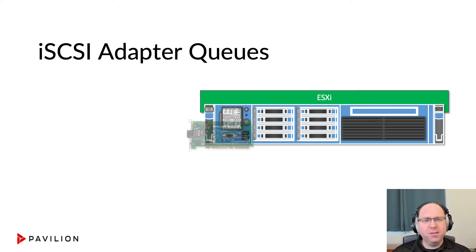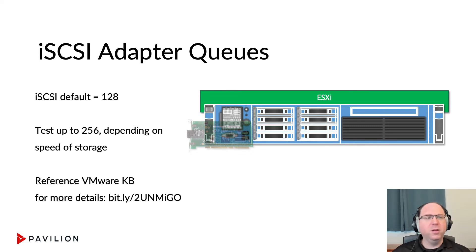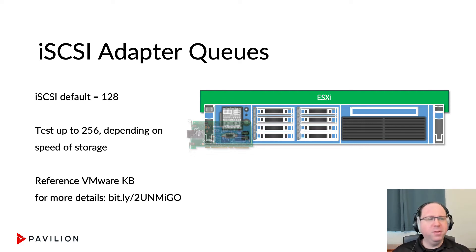If you're running iSCSI, especially a software iSCSI initiator, your default queue depth is 128 — that's better than some of these fiber cards, but you can still increase that. Test all the way up to 256, sometimes even higher, depending on the speed of your underlying storage. There's a VMware KB article that gives you details on how to change the iSCSI adapter queue depth.